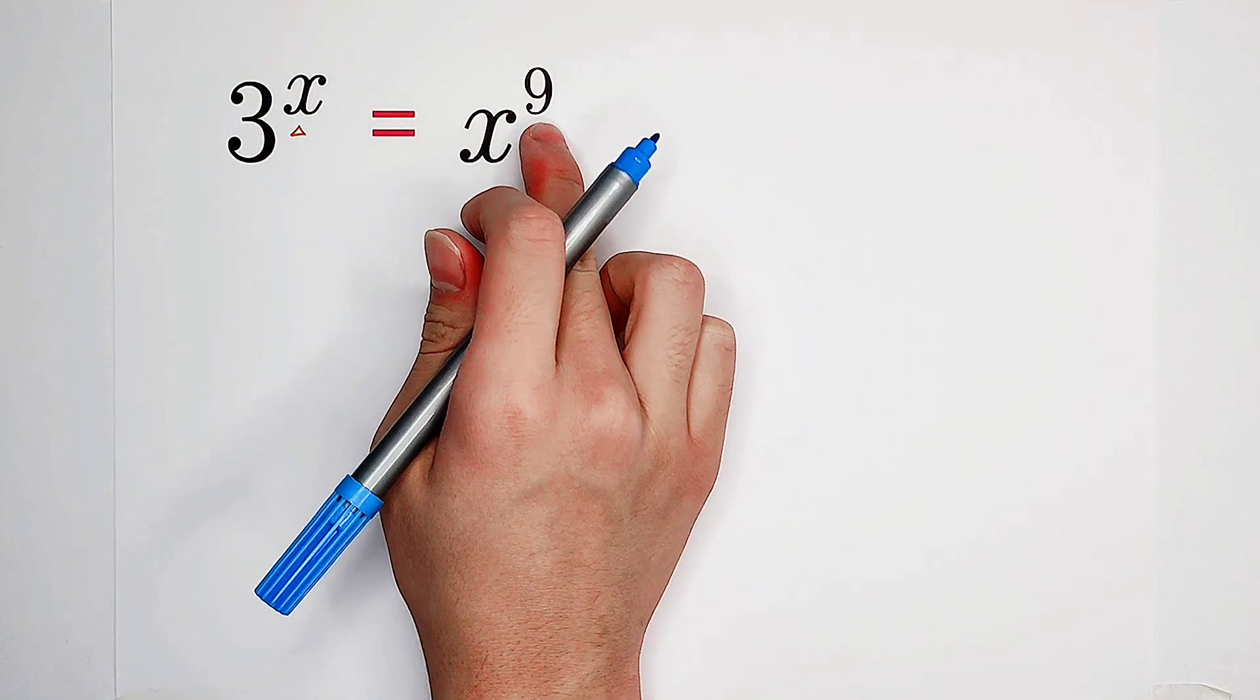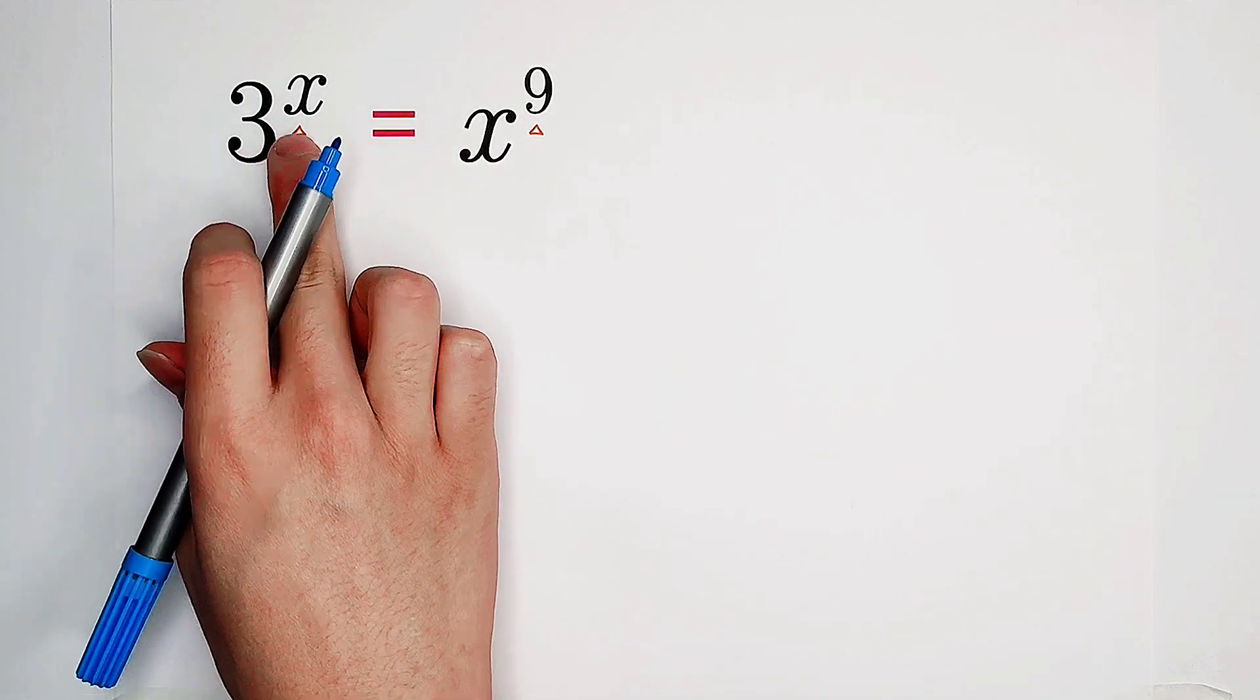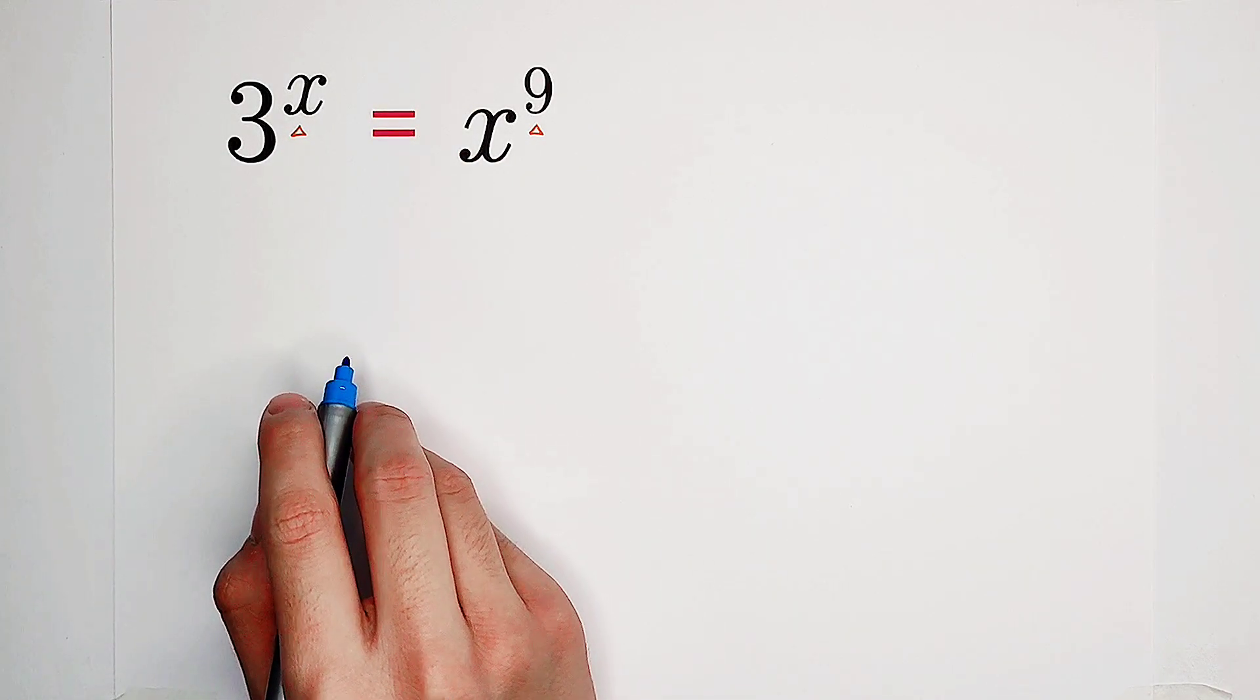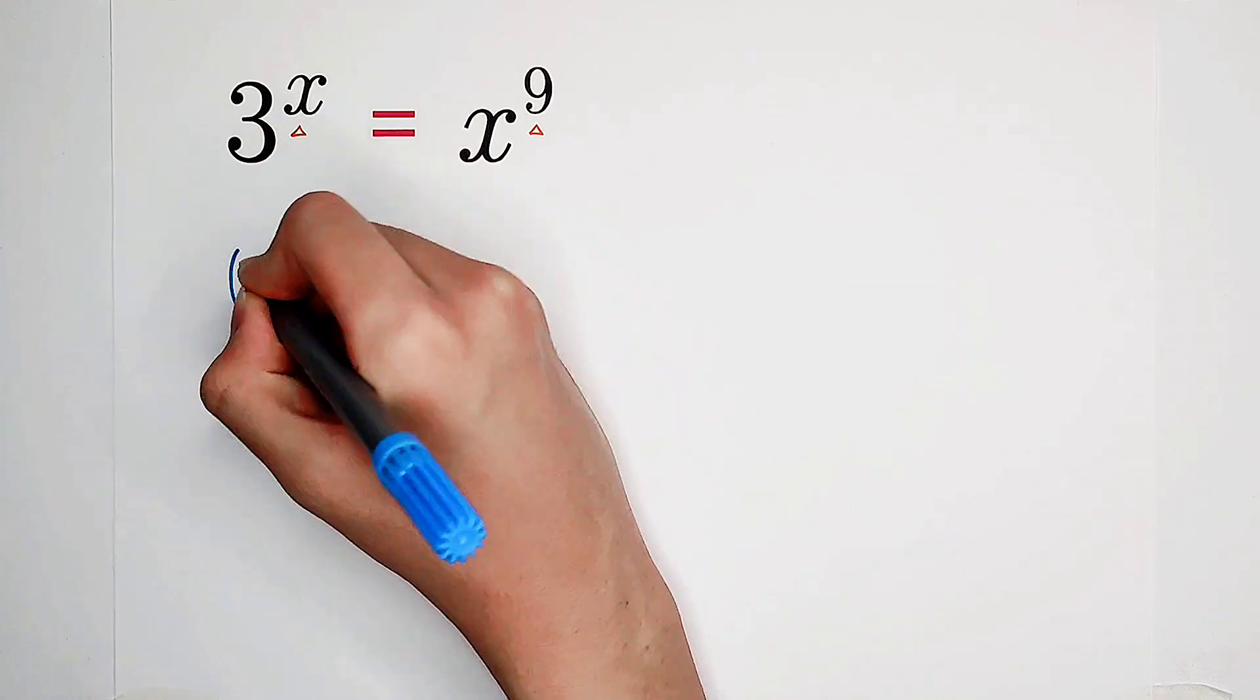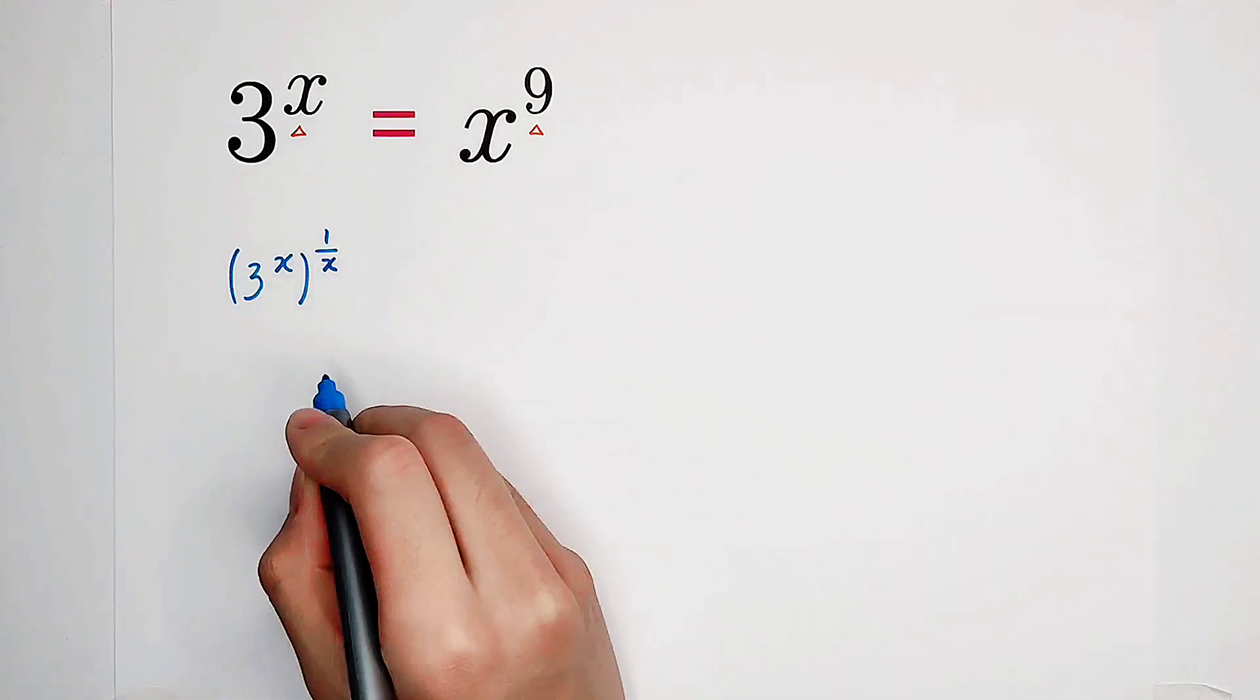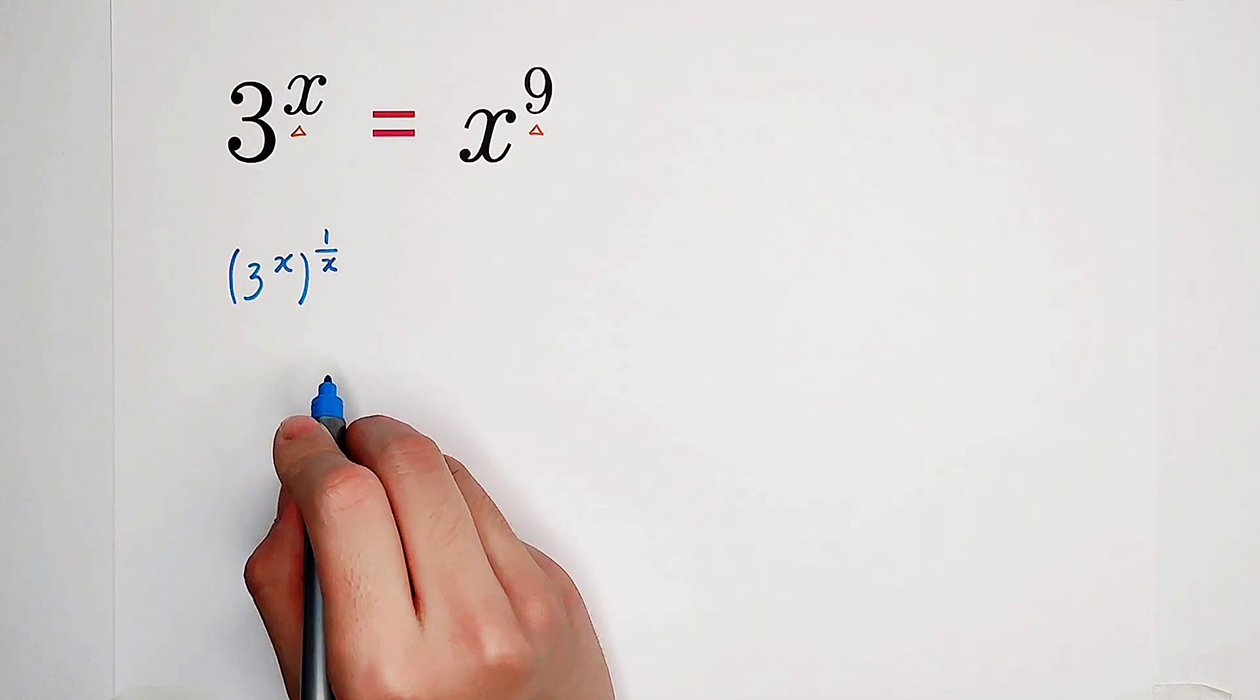We have another way and another better way. Since they're the exponents, now what I'm going to do is to take the reciprocals as powers on both sides. That means, firstly, I like to take 1 over x as a power on both sides.